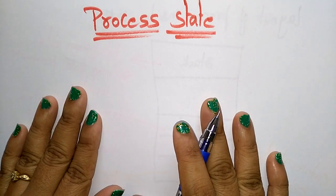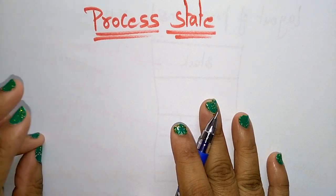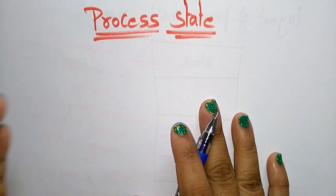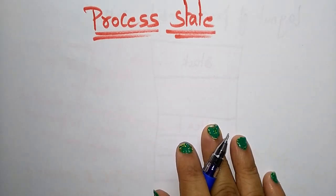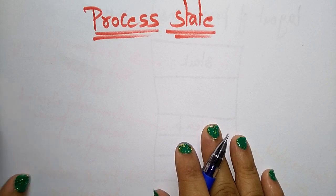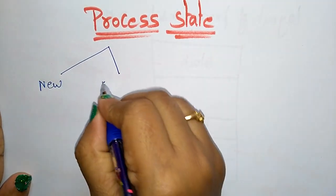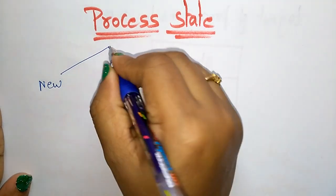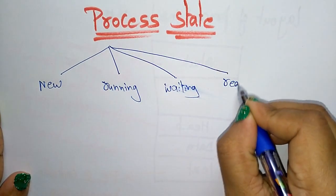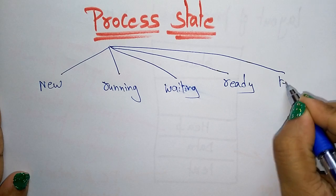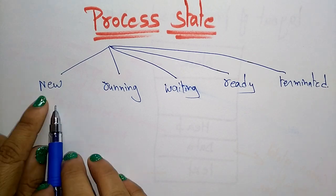Let me take a general example of how a process changes its states. Whatever program we write is stored in text files. When that program executes it is loaded into main memory, and there it changes its states — like new, running, waiting, ready, and terminate.